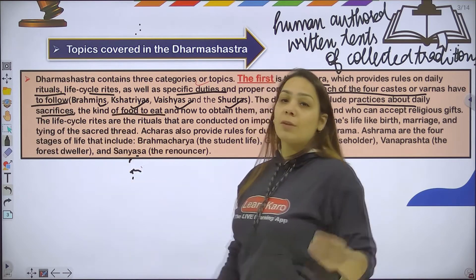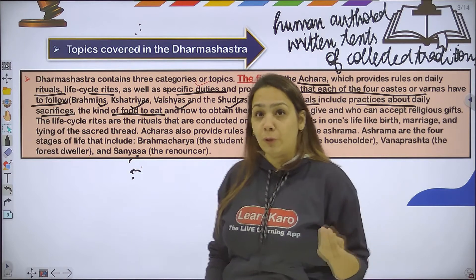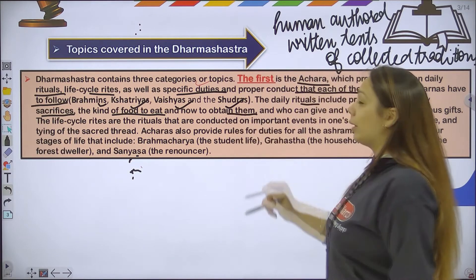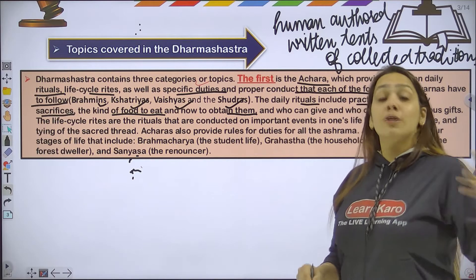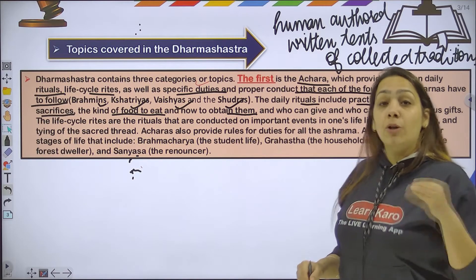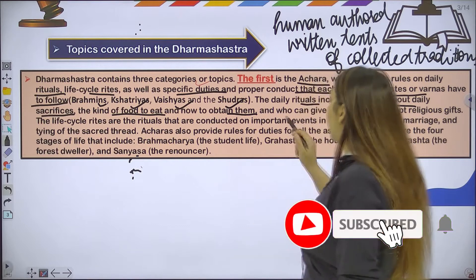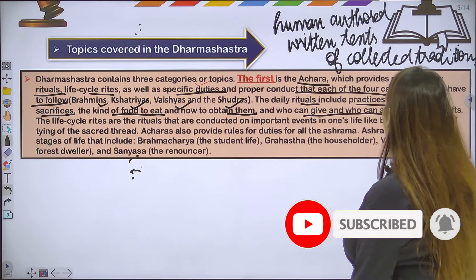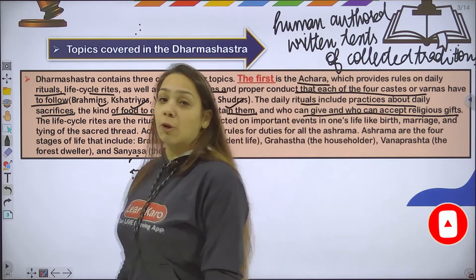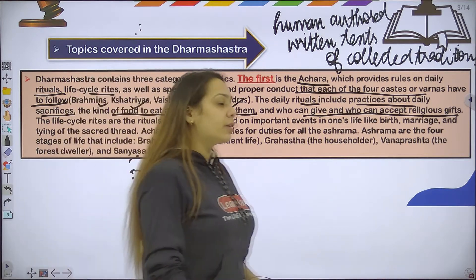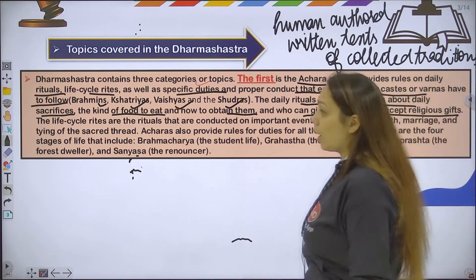What kind of food you eat — whether you are vegetarian or non-vegetarian — and how to obtain it. You should be working honestly and not involved in wrong work. Also covered is who can give and who can accept a religious gift. These are all part of the first category of Dharm Shastra, which is Achara.